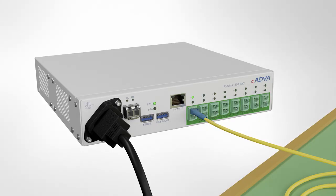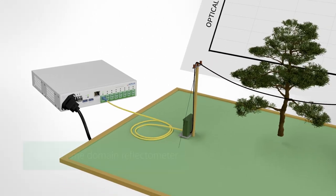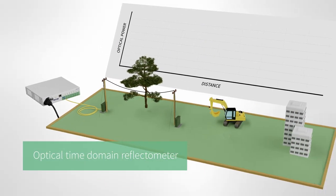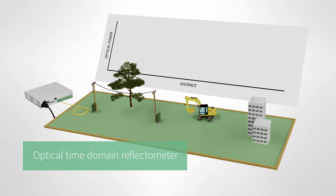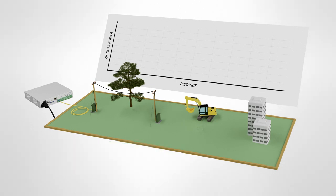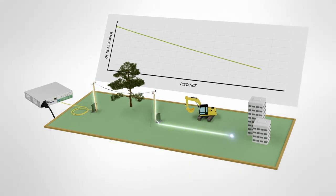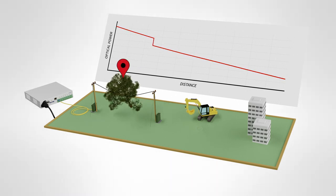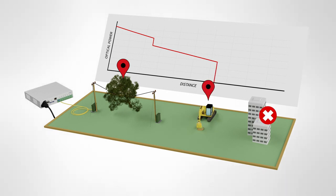The key building block of our ALM technology is an optical time domain reflectometer. This OTDR acts like a radar — it sends a pulse through your fiber optic cables and listens for any reflections. Our ALM then develops a profile of the fiber, and when anything changes, it provides you with a pinpoint location of what's happening.